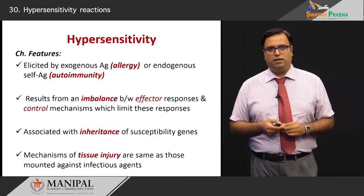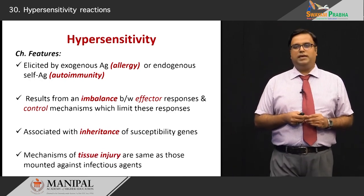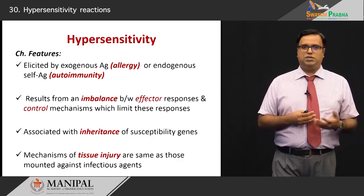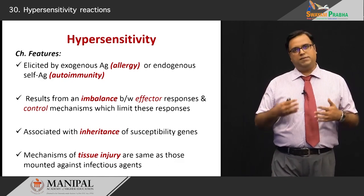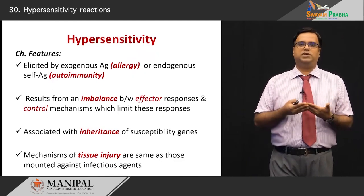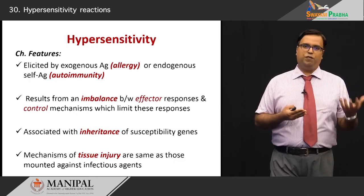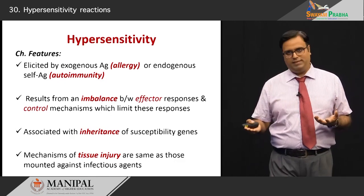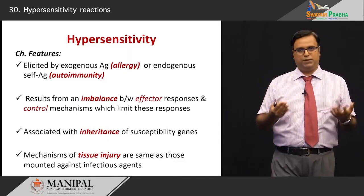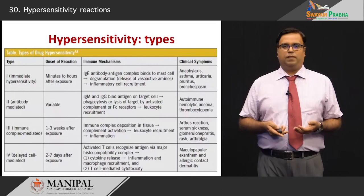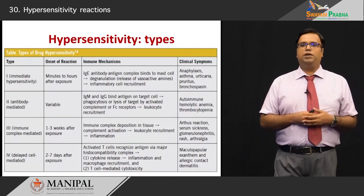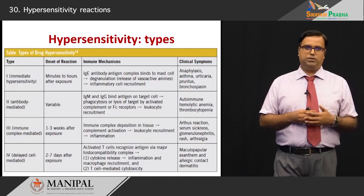The fourth important tenet in this reaction is the mechanism of tissue injury. These reactions will be very similar to those mounted against infectious agents — you will not see any difference at the level of tissue between a reaction to a foreign body versus this particular antigen. So if I look under a microscope, I expect to find the same findings.